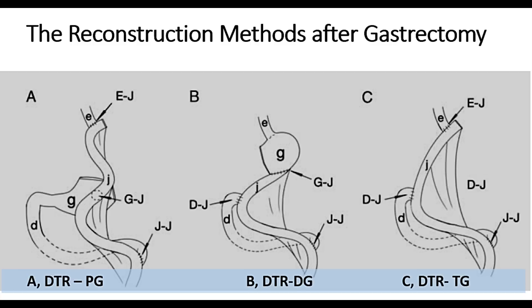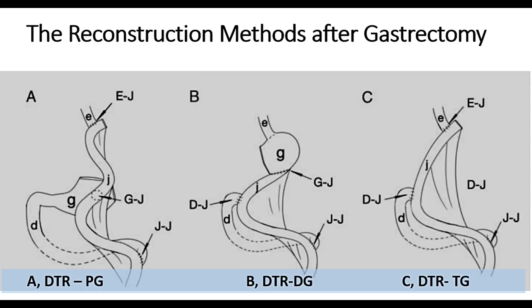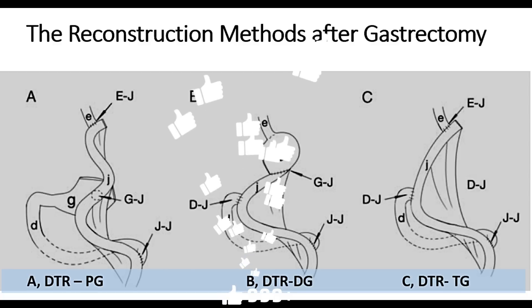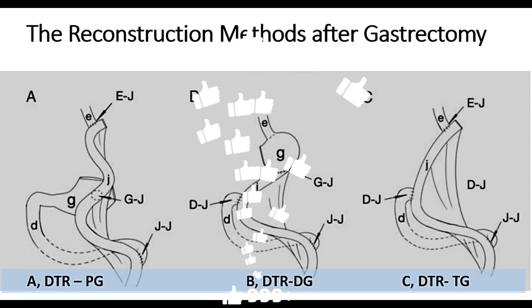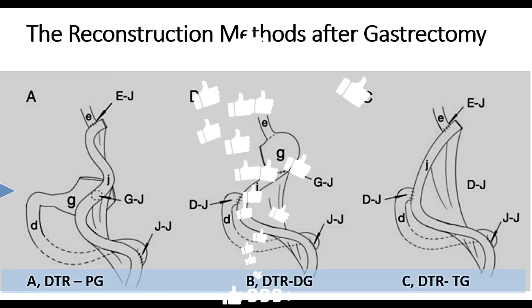The double tract reconstruction method is preferred because it enables endoscopic access to the ampulla, which is a big advantage. In future, if there is any need for endoscopic access to the ampulla or the CBD — for example, in case of CBD stone or peri-ampullary malignancy — this route is easily available. Another advantage is that in proximal gastrectomy the remnant stomach (distal stomach) is available for food and the patient can have a full meal.